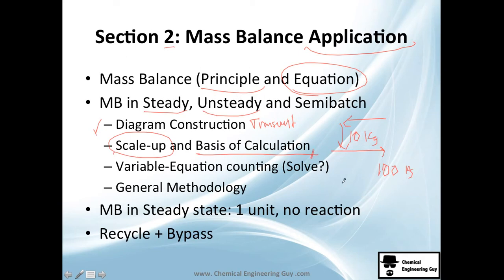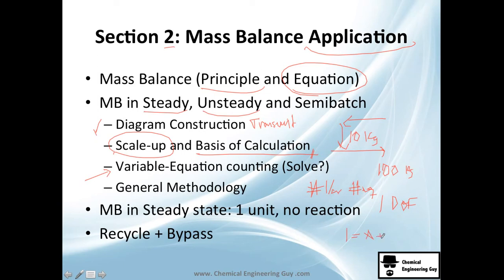Basis of calculation is a very important concept. Many problems require you to choose a basis — if you don't, you'll always have one extra variable, meaning one degree of freedom, and the problem won't be solvable. We're going to see that and the degree of freedom in variable-equation counting, which essentially means a certain number of variables requires a certain number of equations. You cannot solve one equation with two unknowns — it's impossible.